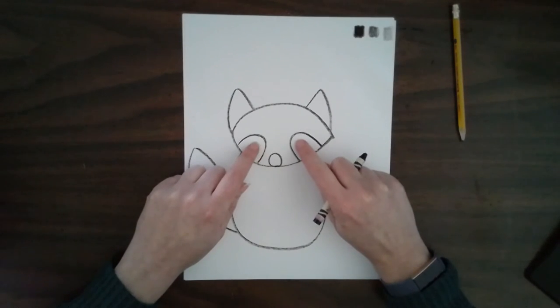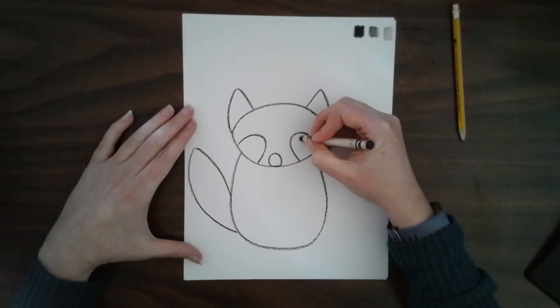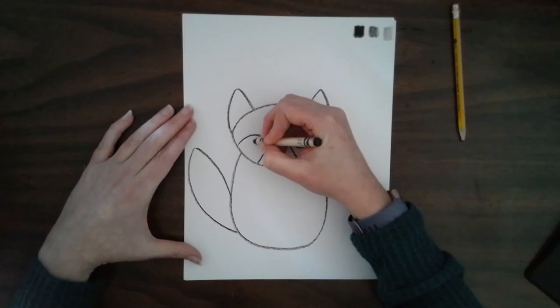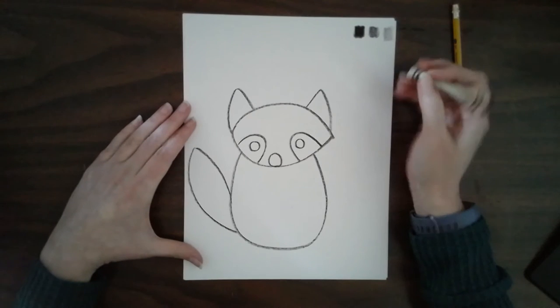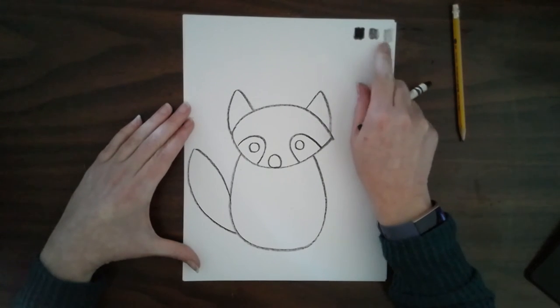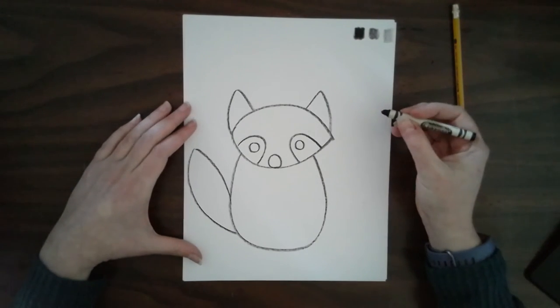Now inside that little area I'm going to do another circle. Do you know what it is yet? It's going to be a raccoon and my raccoon is going to be all three of my values. Alright, let's add some more details.